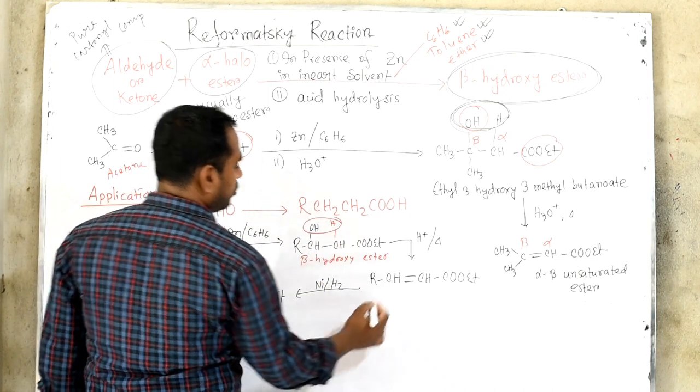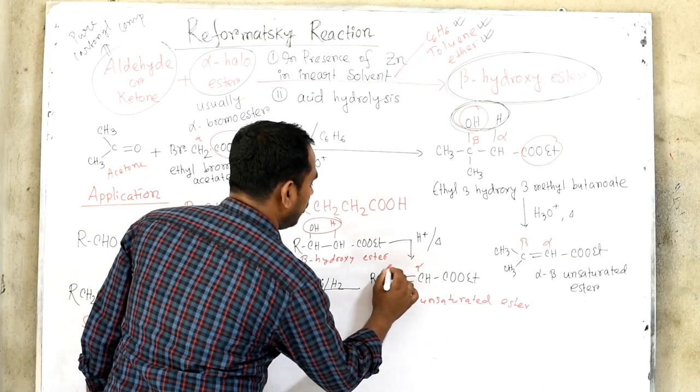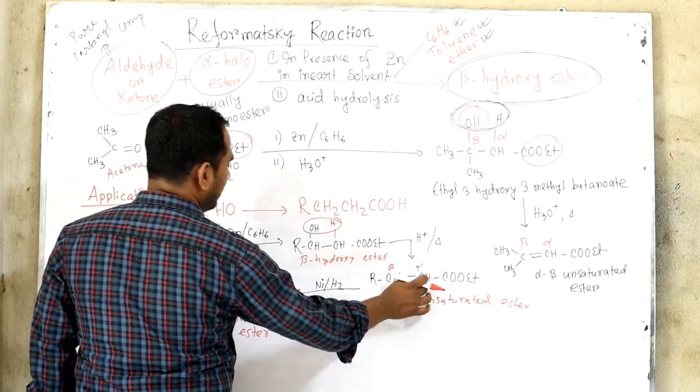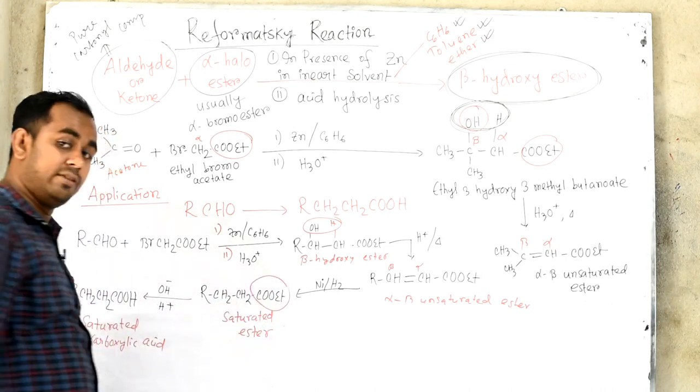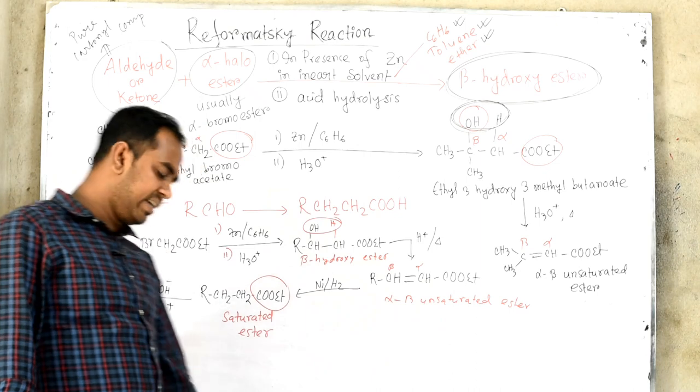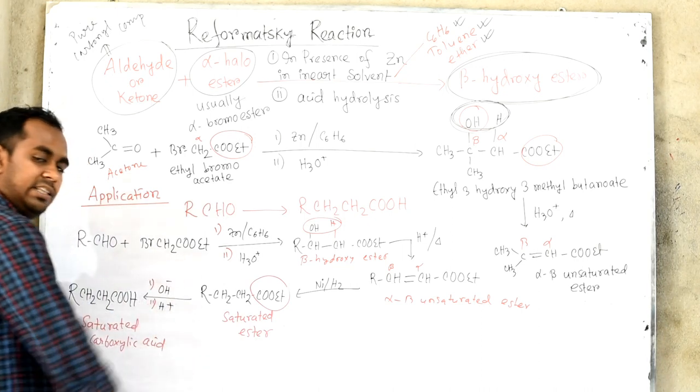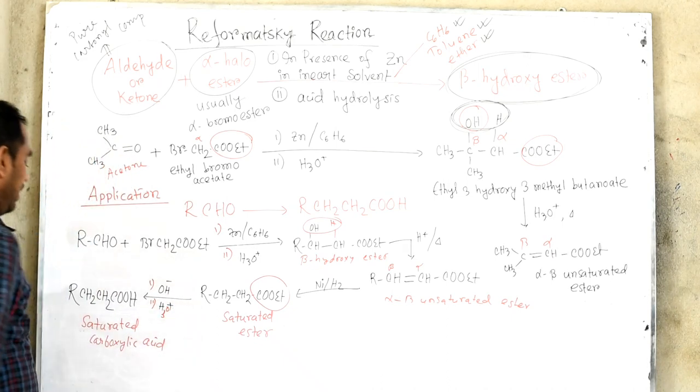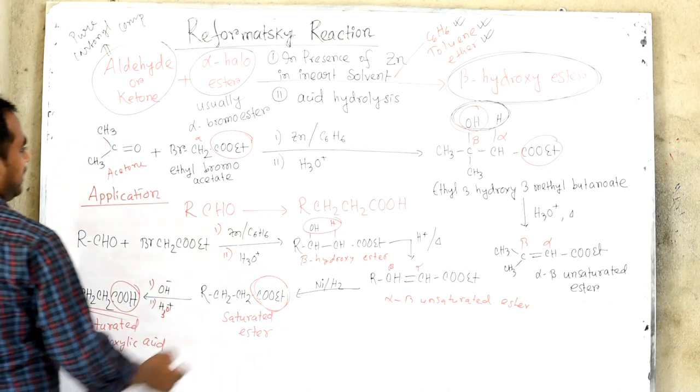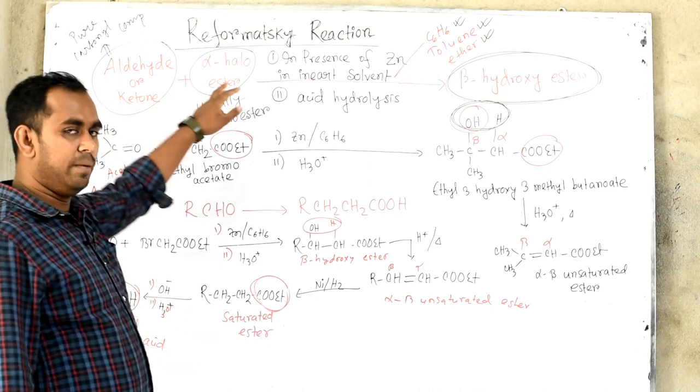Alpha-beta unsaturated ester. Alpha-beta unsaturated nickel hydrogen reduction. We have RCH2CH=CHCOOC2H5. With nickel hydrogen, we have RCH2CH2CH2COOC2H5. We have saturated ester. Alpha-beta unsaturated ester to saturated ester.